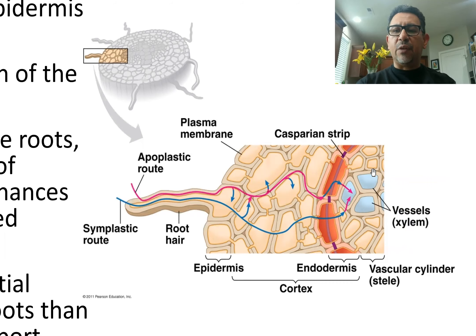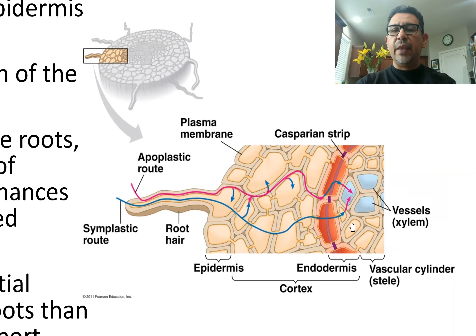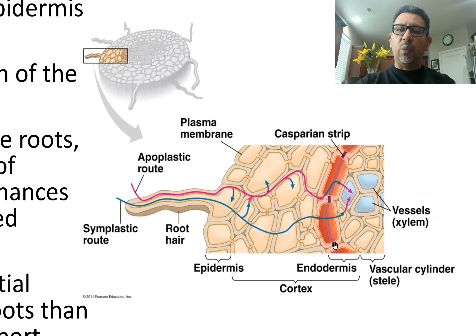One thing we know about water and minerals is that when we compare their concentrations outside of the root to those in the vascular cylinder, the vascular cylinder has a greater concentration of both water and minerals. A lot of it has to do with the function performed by the endodermis — a single cell-layer thick structure, meaning it is just one cell in terms of thickness.